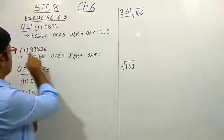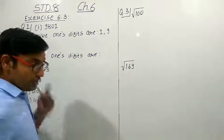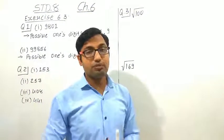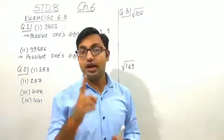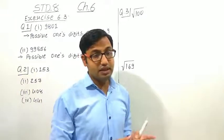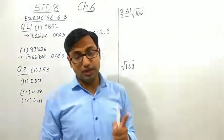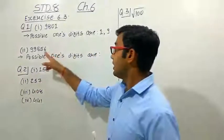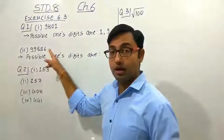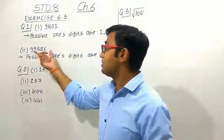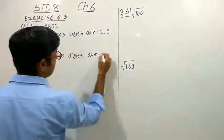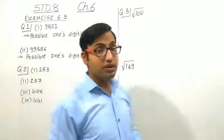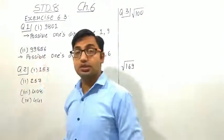Let us see another number, that is 99856. Here 6 is at the unit place. When we apply the square of 4, we get 16 — so 6 is at the unit place. Similarly, when we apply the square of 6, we get 36 — again 6 is there. So when 6 is at the unit place of the perfect square number, the unit place digit of its square root may be either 4 or 6.